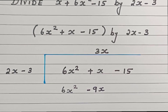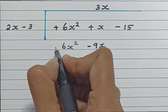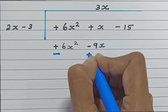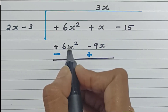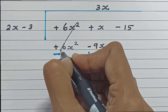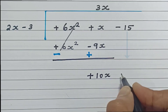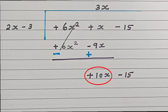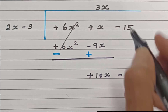Now that we are through with the multiplication, we need to subtract the results. Before subtraction, we need to change their symbols — plus changes to minus, minus changes to plus. Once symbols are changed: 6x squared minus 6x squared gives us 0, so we cancel it. Plus x plus 9x gives us plus 10x. Bring down the next term, minus 15. Now 10x minus 15 becomes the new dividend. Take the first term 10x and divide by 2x, which gives us 5. Our quotient is plus 5.